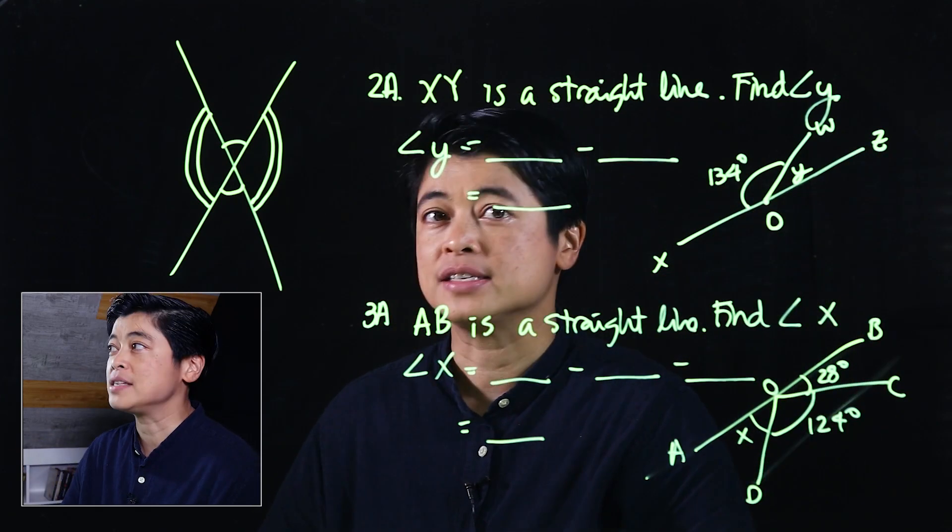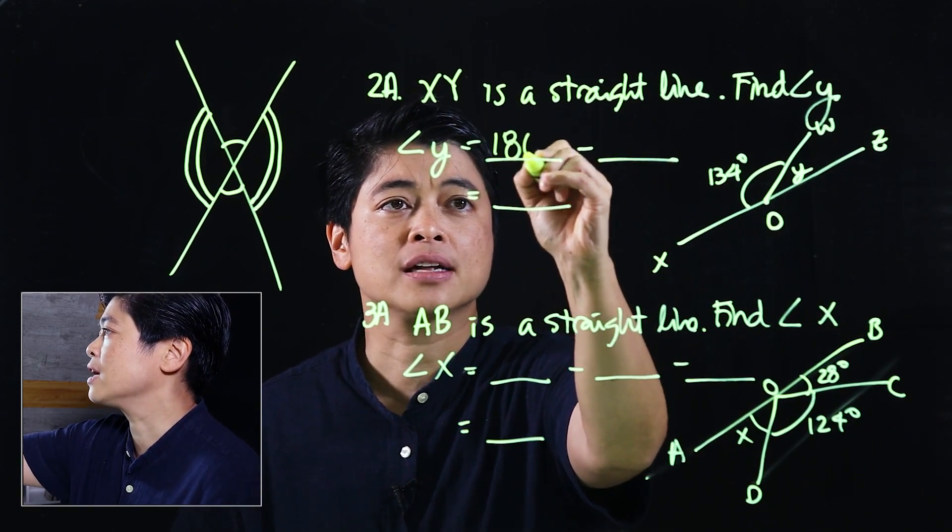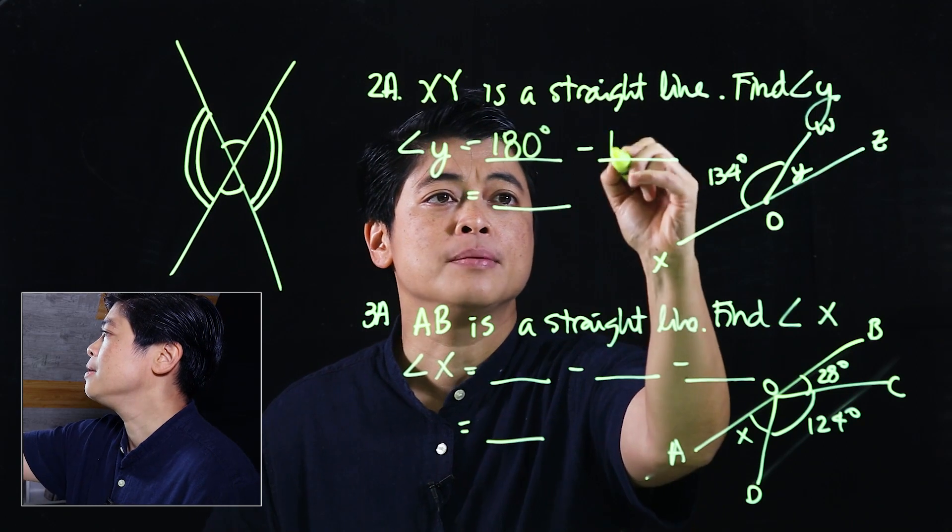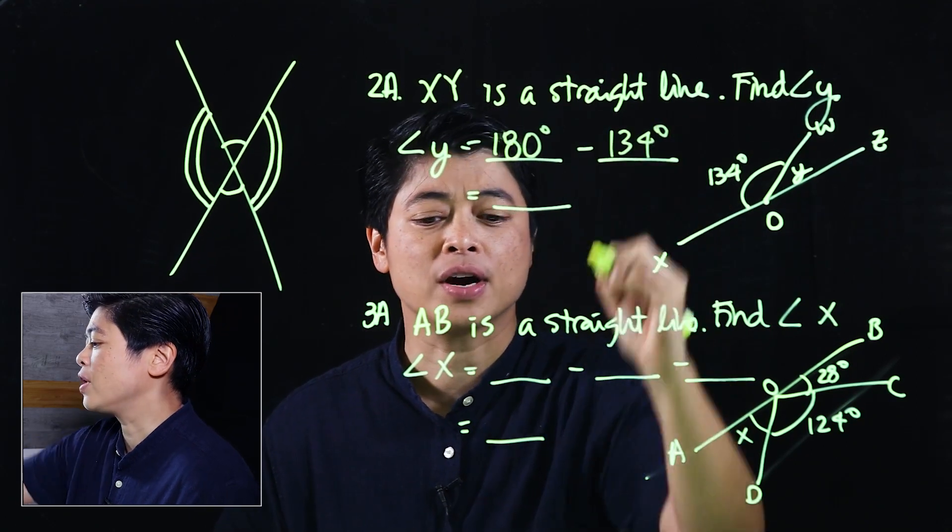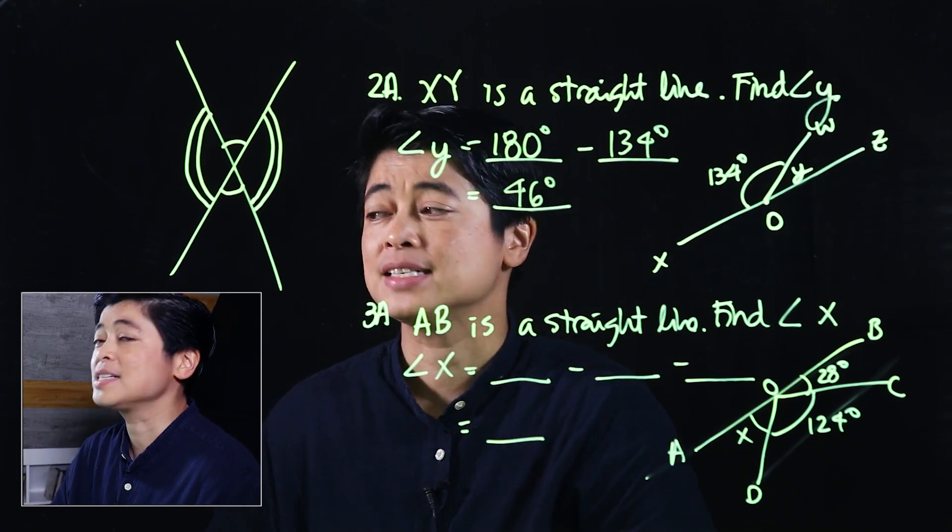To find angle Y, we just subtract 180 degrees minus 134 degrees, which means this should give us 46 degrees.